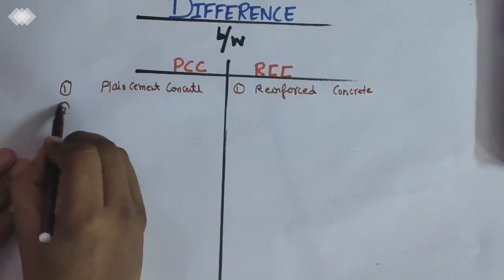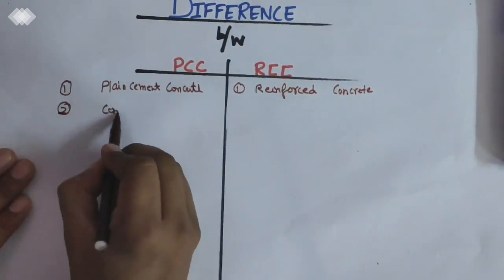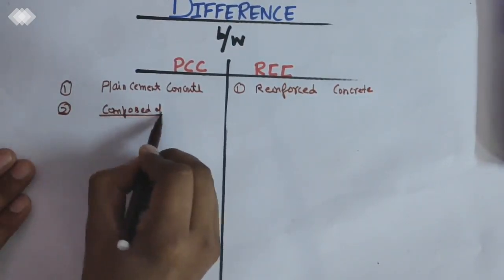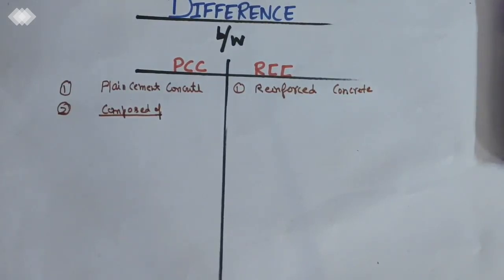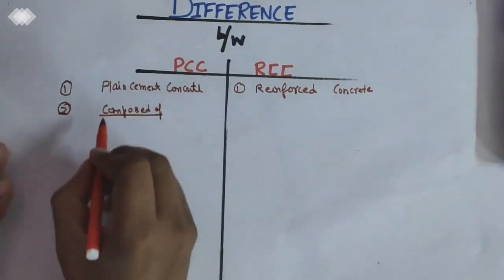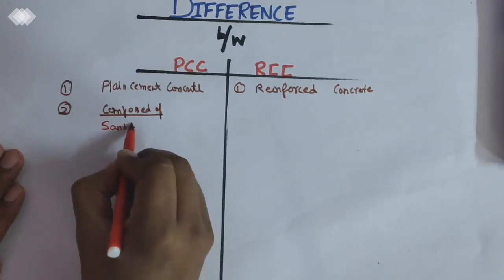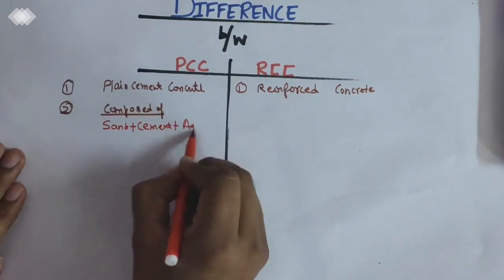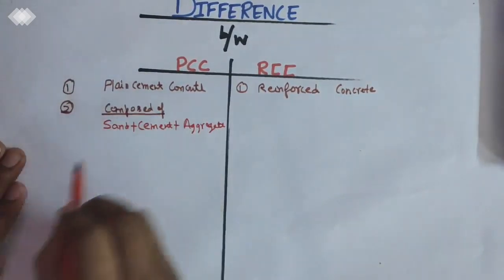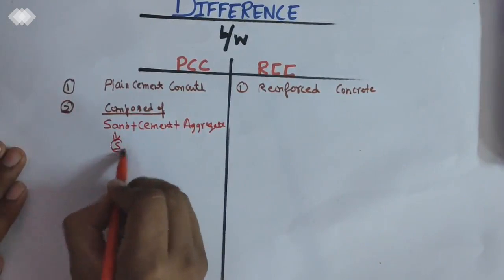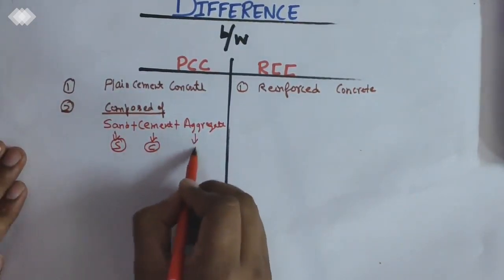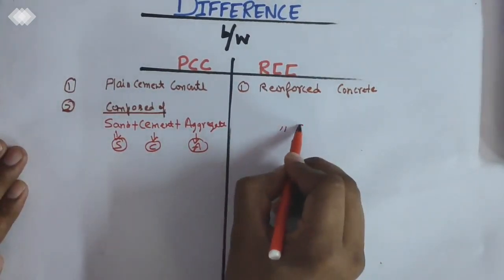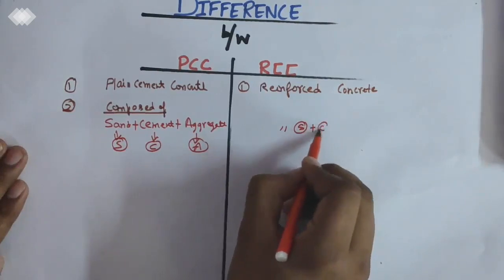The second point of difference is composition. What is it composed of? If we talk about the composition, it is sand plus cement plus aggregate. As you can see, S, C, A. The same here follows: S plus C plus A.